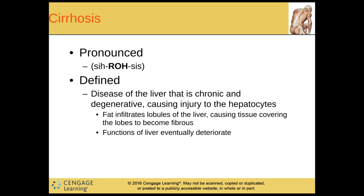Then we have cirrhosis. This is a disease of the liver that's chronic, meaning it happens over a long period of time and it's degenerative. It's causing injury to the hepatocytes — fat infiltrates the lobules of the liver, causing the tissue covering the lobes to become fibrous, and the function of the liver is eventually deteriorated.